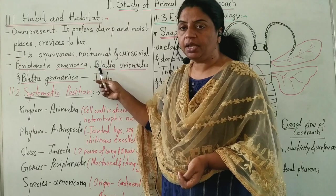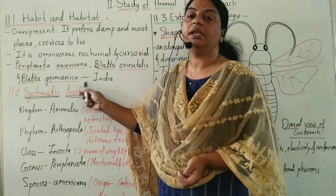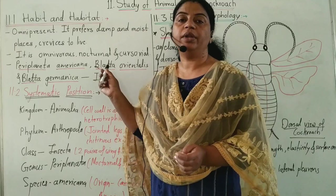The three common species of cockroaches found in India are Periplaneta americana, Blatta orientalis, and Blatta germanica.